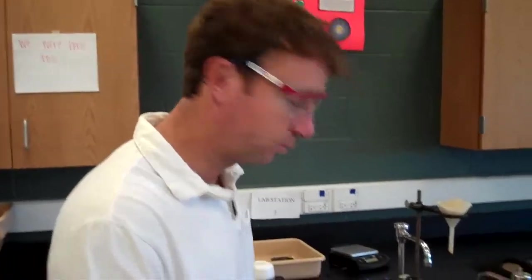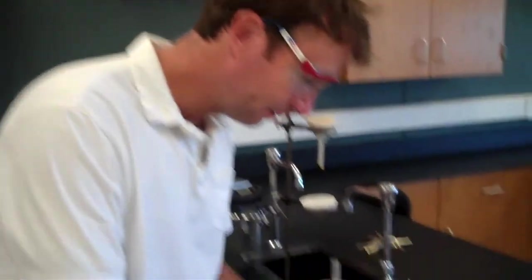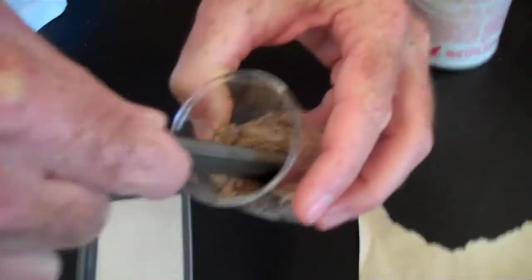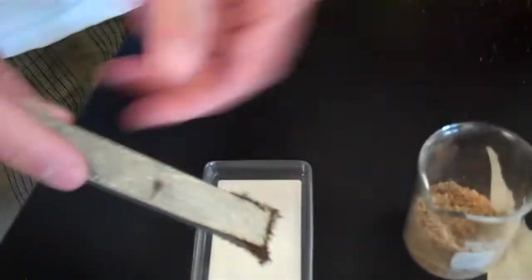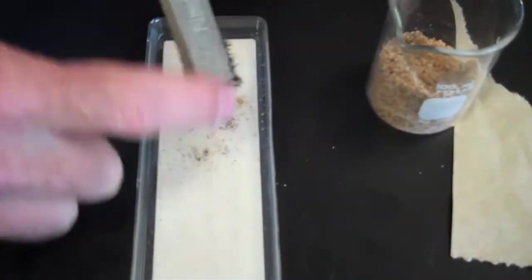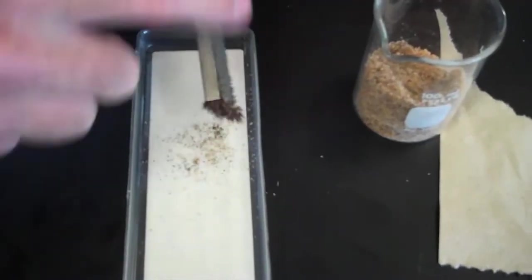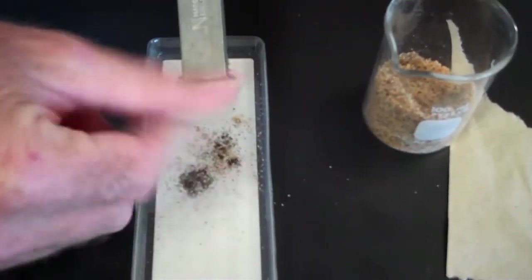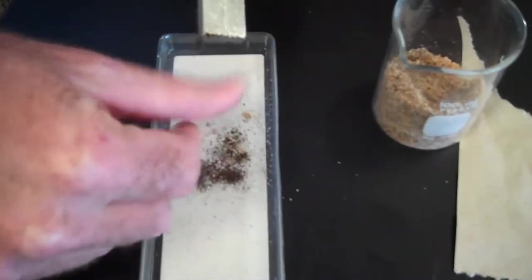The properties we're going to use to separate the iron from the sand and salt, that's a property of iron: magnetism. If we take the magnet and stick it down in with the sand, salt, and iron, you'll see that we can remove the iron. So with careful practice, we can pull all the iron out of the sand, salt, and iron mixture.